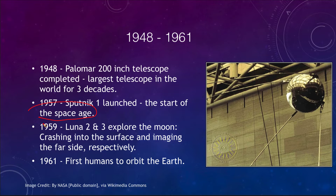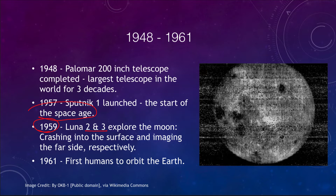Just two years later in 1959, Luna 2 and Luna 3 explored the moon. Luna 2 crashed into the lunar surface — the first time we put something on another world. Luna 3 gave us an image of the far side of the moon for the very first time. While not a great image, it was very important. Until 1959, we did not know what the far side of our nearest neighbor in space looked like.